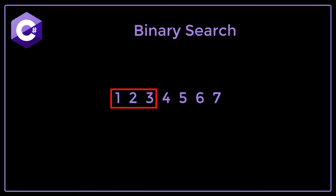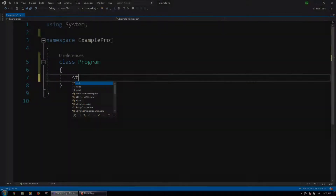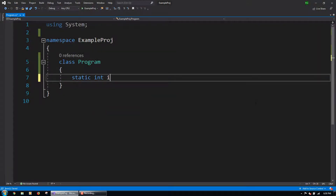Then it searches that half. The elements in the left half of the array are 1, 2, and 3. The binary search starts out at the midpoint here, which is 2. Since 2 was found, its index will be returned. Let's write a function that will perform a binary search.